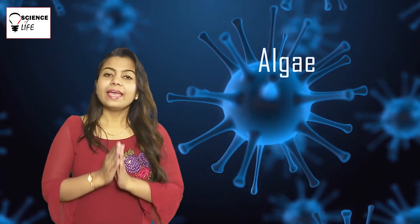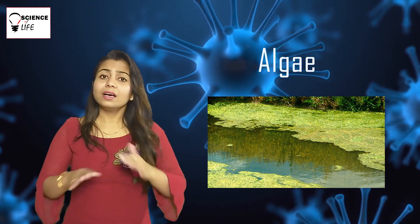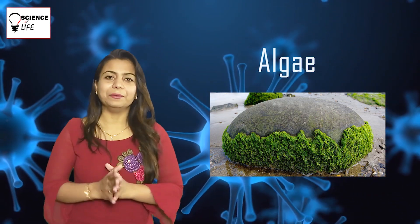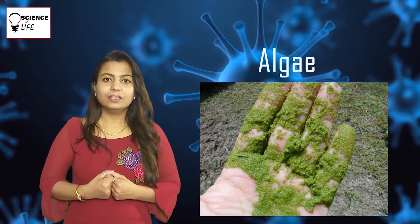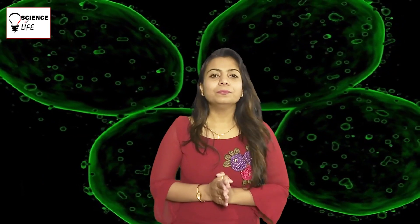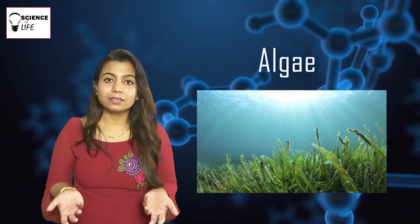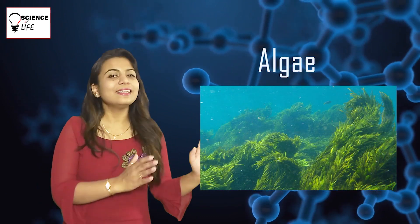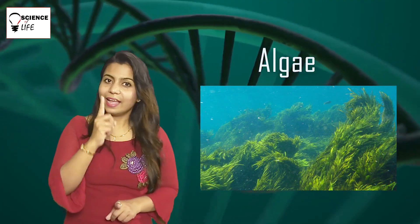Coming to the third category — algae. You must have seen a green layer on ponds and lakes. That layer is called algae. Algae contains chlorophyll and so they are completely photosynthetic — they perform photosynthesis and obtain their nutrition from that. All algae are normally unicellular, having only one cell — no legs or hands, just a green layer structure. But seaweeds are an exception — they are phytoplanktons and are multicellular, forming large colonies. So all algae are unicellular except seaweeds.